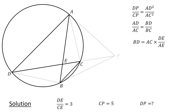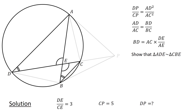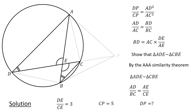Next, consider triangles ADE and CBE. Let us show that these triangles are similar. Since angles DEA and BEC are vertically opposite angles, they are equal. And since angles ADE and CBE subtend the same arc, they are also equal. Therefore, by the AA similarity theorem, the two triangles are similar. Since corresponding sides of similar triangles are proportional, we have AD over BC equals AE over CE, or 1 over BC equals 1 over AD times AE over CE.